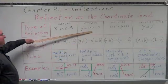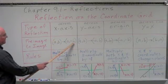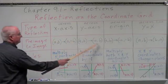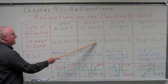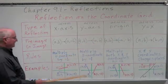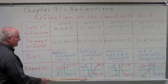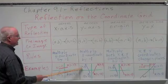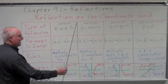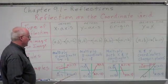When we reflect across the y-axis, we multiply the x-coordinate by negative 1. So A at (1, −2) becomes A prime at (−1, −2), and B at (3, 3) becomes B prime at (−3, 3). We make a mirror image across the y-axis — the line of reflection becomes the y-axis.